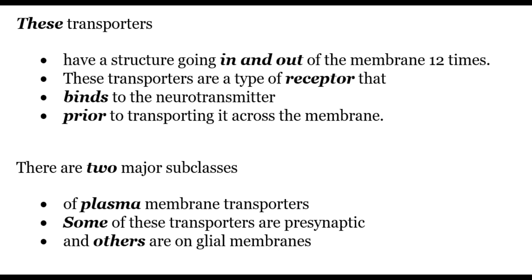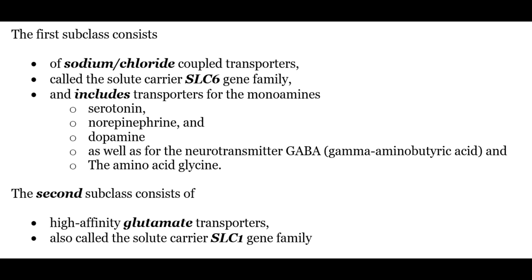These transporters are a type of receptor that binds to the neurotransmitter prior to transporting it across the membrane. There are two major subclasses of plasma membrane transporters — some are presynaptic and others are on glial membranes. The first subclass consists of sodium-chloride coupled transporters called the solute carrier SLC6 gene family, and includes transporters for monoamines such as serotonin, norepinephrine, dopamine, as well as for GABA and the amino acid glycine. The second subclass consists of high affinity glutamate transporters, also called the SLC1 gene family.